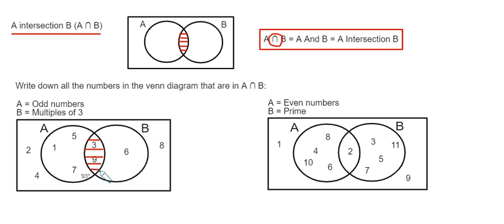So in this Venn diagram, the numbers are three and nine, which are the odd numbers and multiples of three.